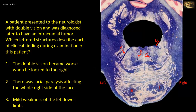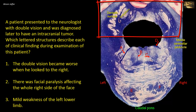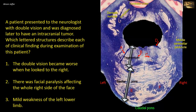A patient presented to the neurologist with double vision and was diagnosed with an intracranial tumor. Which lettered structures describe each of the clinical findings? This is a section at the caudal part of the pons, which extends laterally to the middle cerebellar peduncle. It also shows cerebellar nuclei and cortex posteriorly. Note the basilar part of the pons and the tegmentum. The tegmentum contains the abducent nucleus.